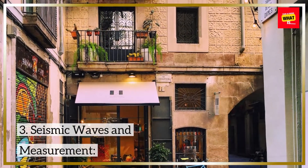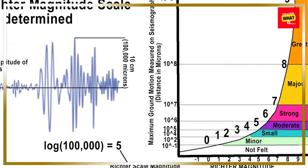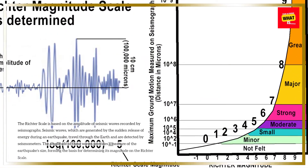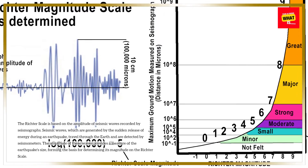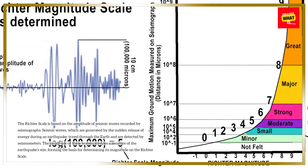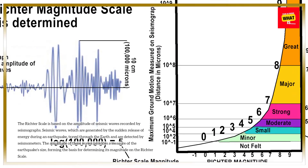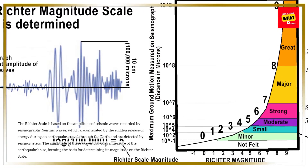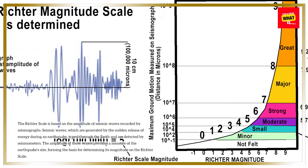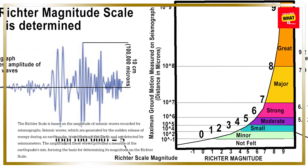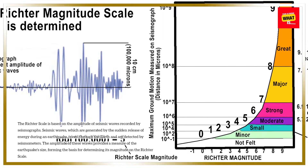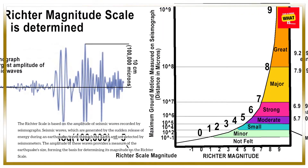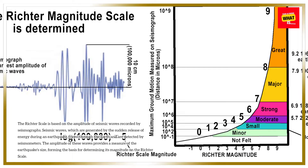The Richter Scale is based on the amplitude of seismic waves recorded by seismographs. Seismic waves, which are generated by the sudden release of energy during an earthquake, travel through the Earth and are detected by seismometers. The amplitude of these waves provides a measure of the earthquake's size, forming the basis for determining its magnitude on the Richter Scale.